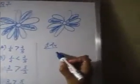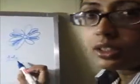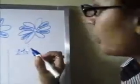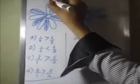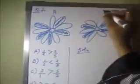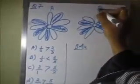For the solution, to make it easier, what we did first: count the total number of petals. This is flower A and this is flower B.